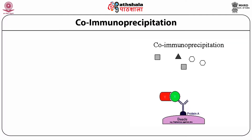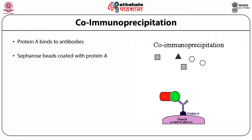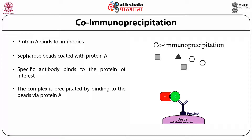Co-immunoprecipitation is another technique to find protein-protein interactions, where it precipitates along with the antigen-antibody complex. Protein A binds to antibodies, and sepharose beads are coated with protein A. A specific antibody binds to the protein of interest, and the complex is precipitated by binding to the beads via protein A. Proteins are then released from the beads by elution.